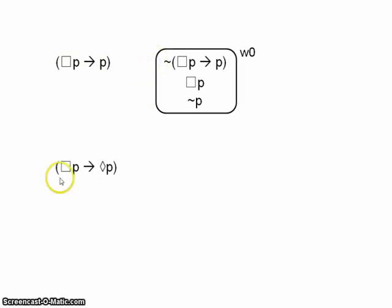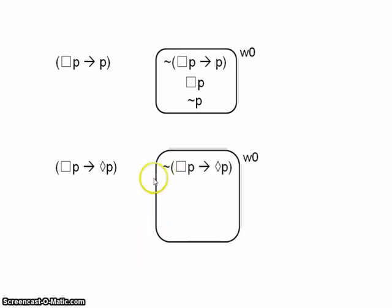Let's say, if necessarily p, then possibly p. Again, that would seem to be quite obviously true. But let's test it for validity. Well, we've got a false conditional. So necessarily p, not possibly p.